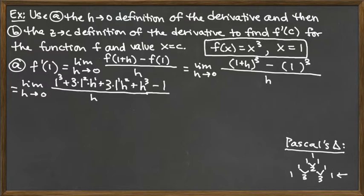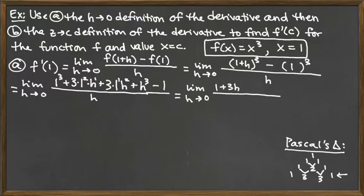The top has been multiplied out, but let's simplify it. We have the limit as h goes to 0. 1 cubed is 1, then 3 times 1 squared times h gives plus 3h, then 3 times 1 to the first times h squared gives 3h squared, and then we have h cubed, minus the 1. All of that is over h.